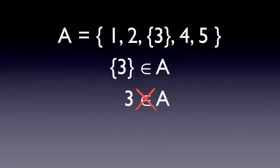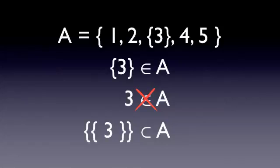Now this is where the notation can get a little tricky. If we want to specify the set containing 3 as a subset of set A, we would do it like this. Notice that this time we have two braces on each side. The inner pair of braces refers to the set that contains the number 3, and the outer pair of braces indicates that whatever they contain is a subset of A. So here we are saying that the set containing 3 is a subset of set A.